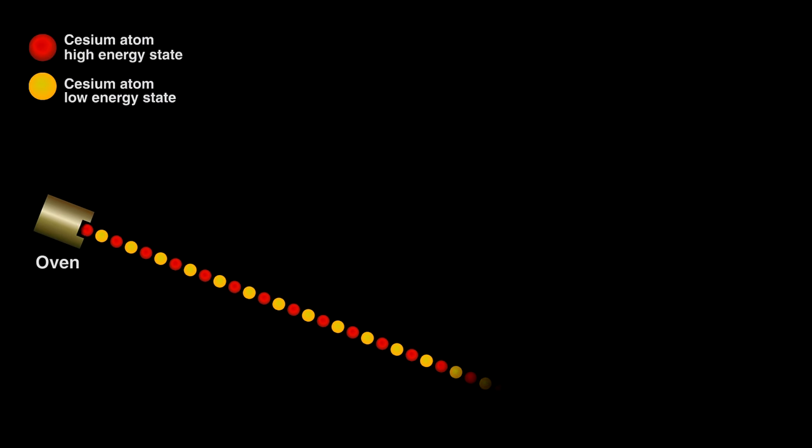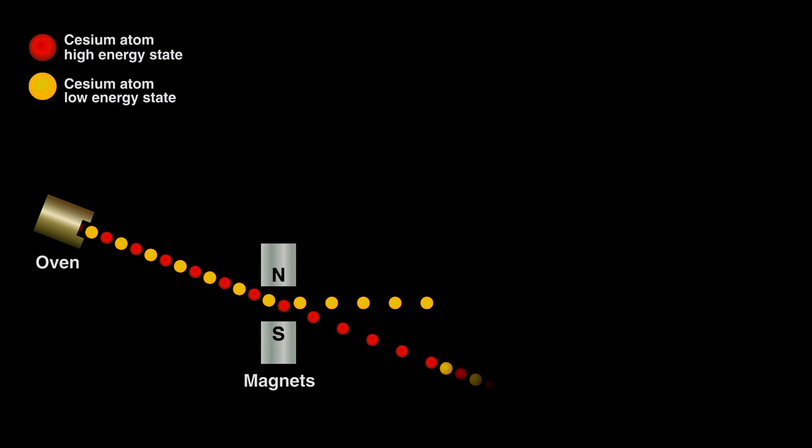In an oven, we heat cesium chloride to create a gaseous stream of cesium ions. The stream contains both the low and high energy ions. We first flow it through a magnet, separating the two types, discarding the high energy ones, allowing the lower energy ions to pass into a chamber.